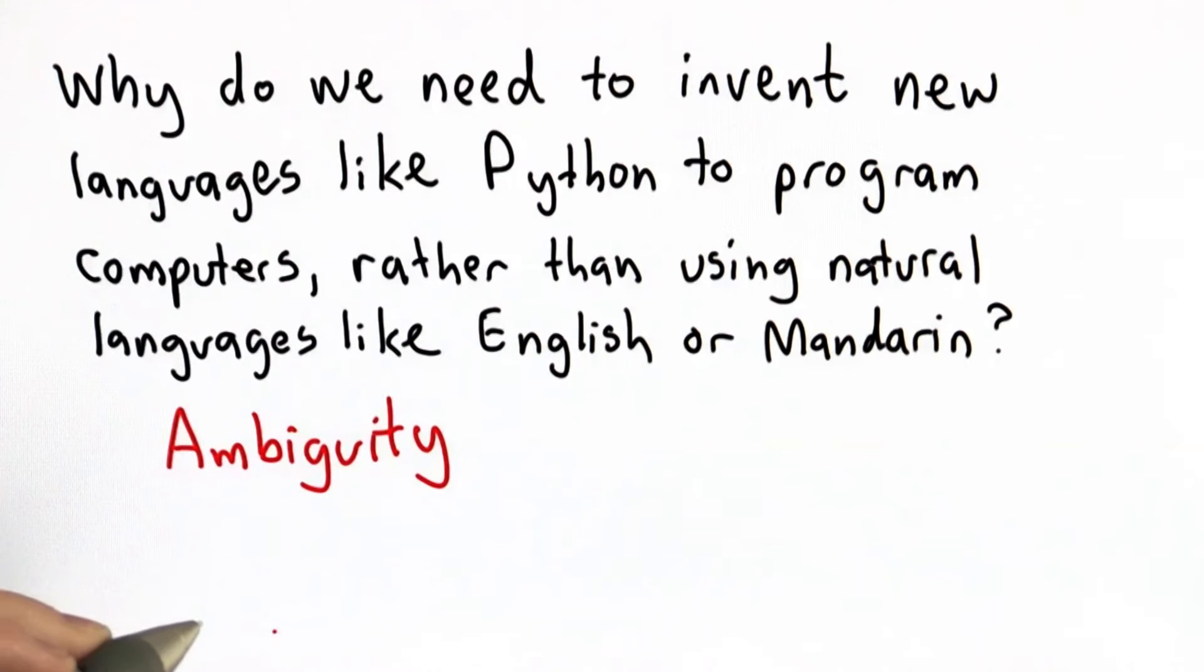Natural languages are inherently ambiguous. Different people can interpret the same sentence to mean many different things. When we program computers, the computer needs to interpret that program, and we want to make sure that the computer interprets the program the exact same way that the programmer who wrote the program intends for it to be interpreted.